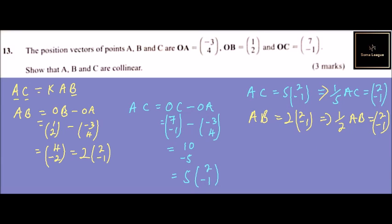And with that, we can now equate the two and say one-fifth AC is the same as one-half AB. If you multiply both sides by 5, AC equals five-halves AB. And just like I explained in the beginning, if you can express one vector as a scalar multiple of the other, then A, B, and C are collinear.